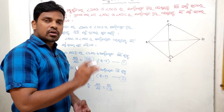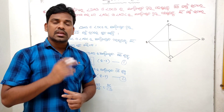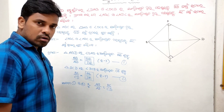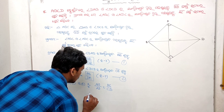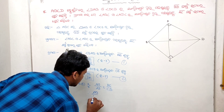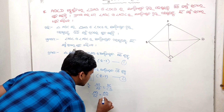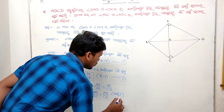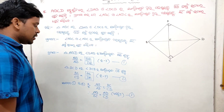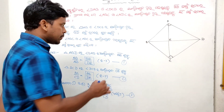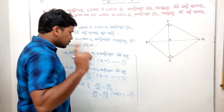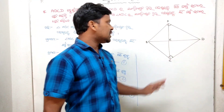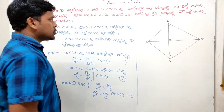This is the same thing. Therefore, AB by BC by AB by AD by CD — let's go through the class. Therefore, AB by BC equals AD by CD. This means AB by BC is AD by CD — that is the result.